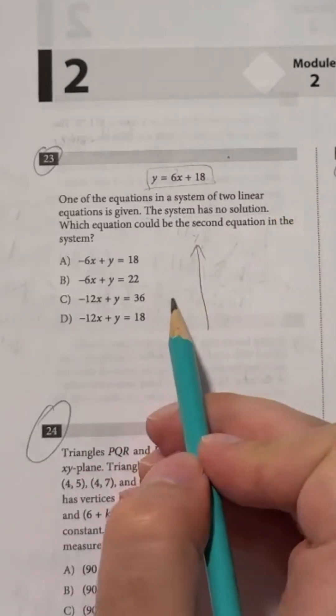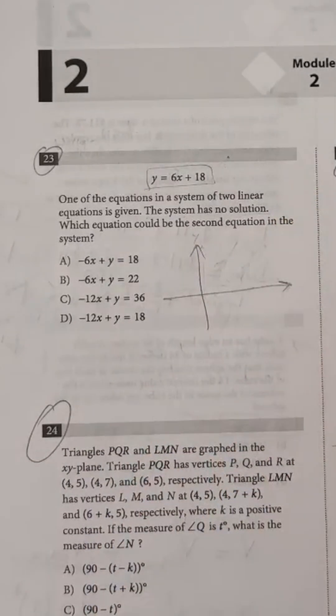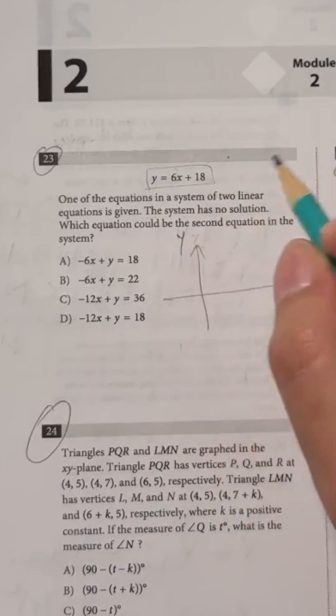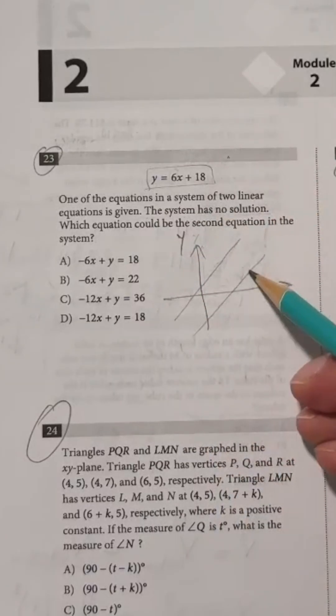A system of two lines with no solution means that those two lines do not intersect. In other words, those two lines are parallel.